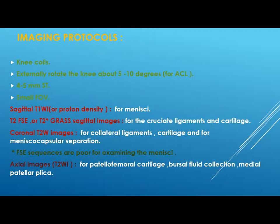For the protocols, you will take only sagittal images on T1, but the other planes on T2 — sagittal, coronal, and axial. A sagittal T1 is used for examining the menisci, T2 or T2-star for cruciate ligaments and cartilage, coronal T2 for collateral ligaments and meniscocapsular separation, and axial images for patellofemoral cartilage, bursal fluid collection, and medial patellar plica.